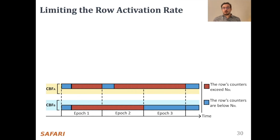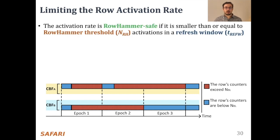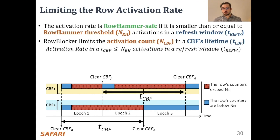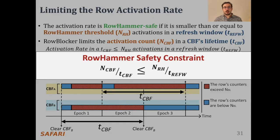Now, to ensure row hammer-safe operation, Row Blocker limits the activation rate of blacklisted rows at the row hammer-safe level. An activation rate is row hammer-safe if it is smaller than the ratio of row hammer threshold to the refresh window. Row Blocker ensures this activation rate within the lifetime of each counting bloom filter TCBF, which is bounded by clear operations. Therefore, we write the row hammer-safe condition as: activation rate in a TCBF must be smaller than or equal to NRH row activations per TRFW refresh window. We denote the number of activations in a TCBF as nCBF and derive the shown constraints for row hammer safety.